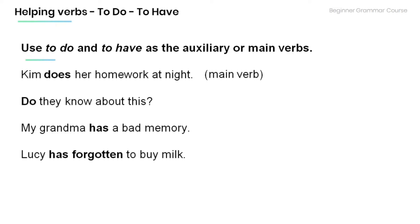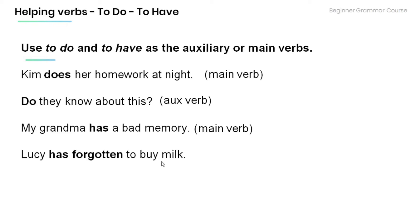'Kim does her homework at night' — main verb. 'Do they know about this?' — auxiliary verb. 'My grandma has a bad memory' — main verb. 'Lucy has forgotten to buy milk' — auxiliary verb.